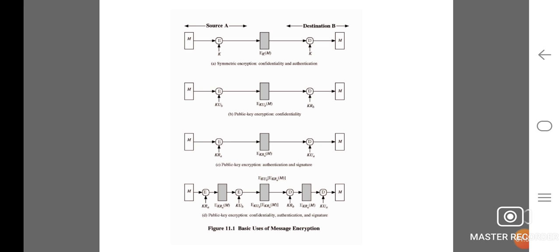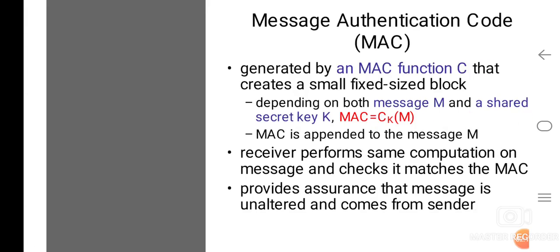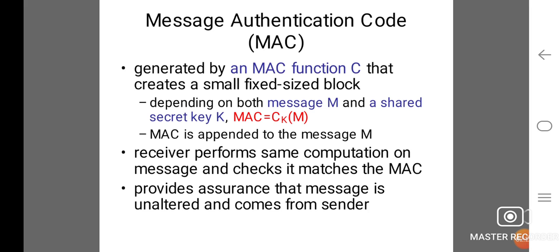This diagram shows the basic uses of message encryption. Diagram A: symmetric encryption providing confidentiality and authentication. Diagram B: public key encryption for confidentiality only. Diagram C: public key encryption for authentication and signature. Diagram D: public key encryption providing confidentiality, authentication, and signature.